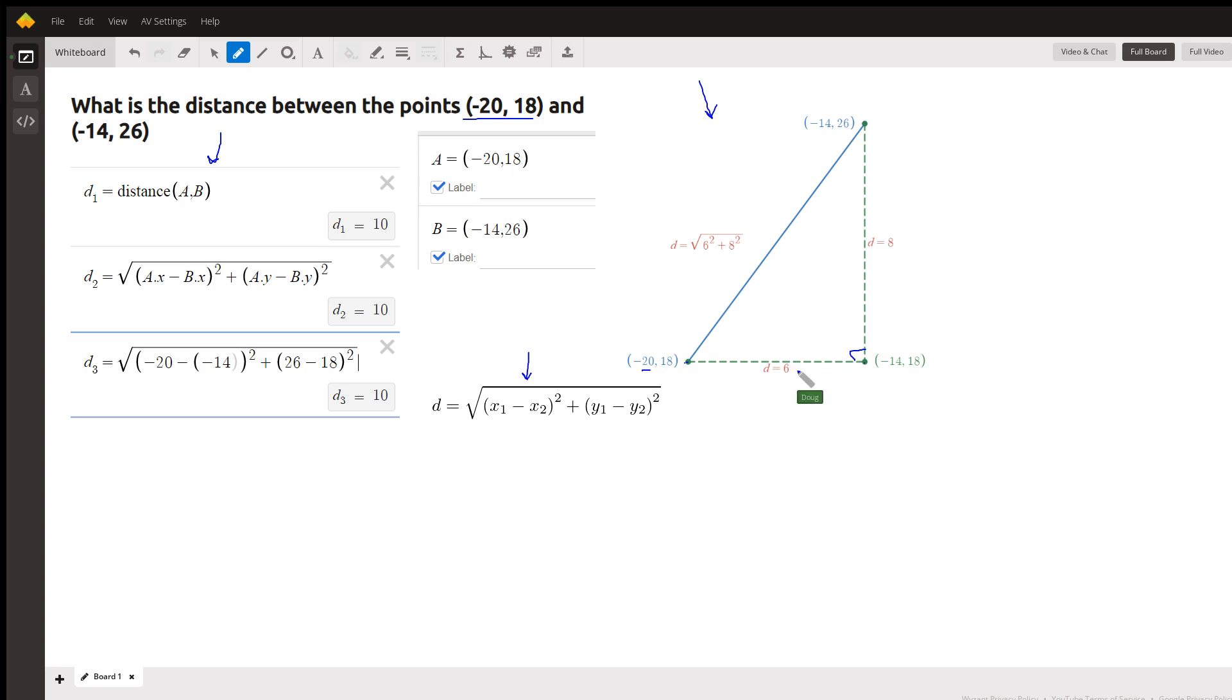finding the change in the x-coordinates. That distance is the absolute value of negative 20 minus negative 14.